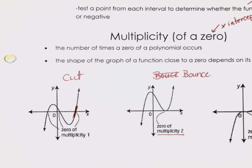If you have a multiplicity of two, we go down to that x-intercept — like the (x + 2) example — and we hit it and then bounce right back up. We do not cut the x-axis, we do not cross it. We bounce at that point, back up or down depending on where you're going.